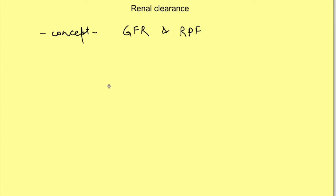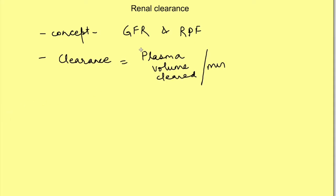Renal clearance is a concept used to estimate glomerular filtration rate and renal plasma flow. Clearance of a substance is defined as the volume of plasma that is cleared of that substance per minute. But what is the meaning of this — is it the volume of plasma which is completely cleared? Does that actually happen?